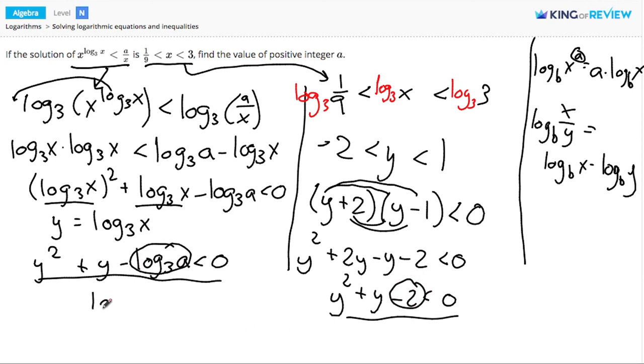Well, 3 to the second power is equal to a. Rewriting this equation in exponential form says a equals 3 to the second power, which is 9. So there's my answer for a. Thanks for watching.